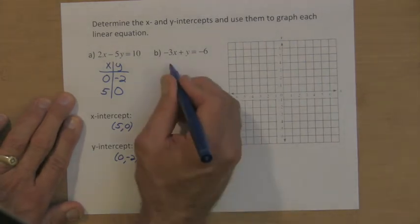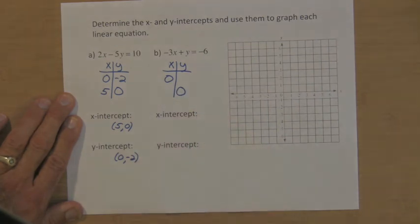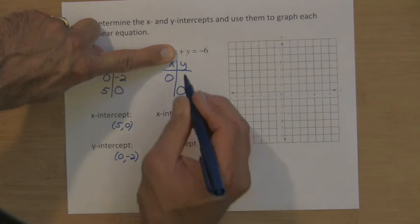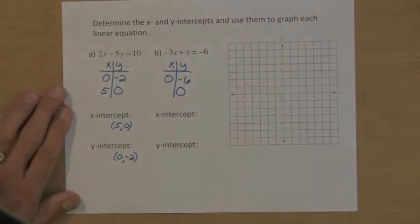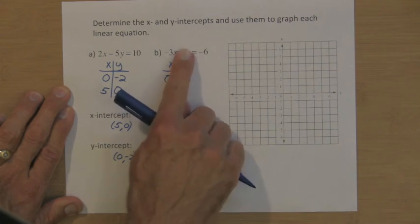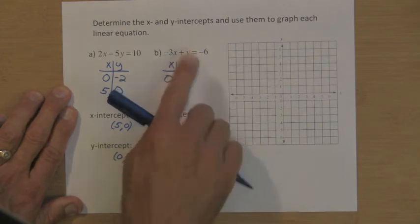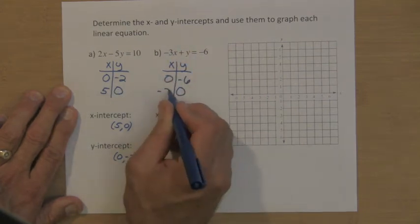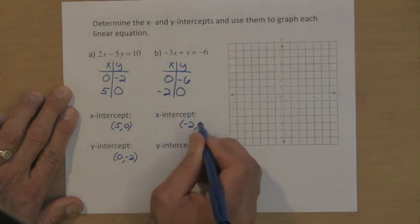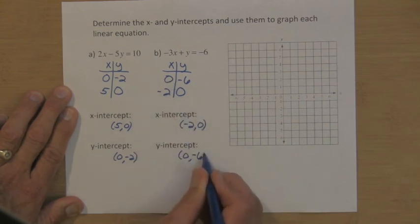For the second equation, find x and y values. When x is zero, negative three times zero goes to zero, so I just have y equals negative six — so there's one point. And when y is zero, putting in zero for y gives negative three x plus zero, so negative three x has to be negative six, meaning x has to be two. My x-intercept is when y equals zero, so that's the point two, zero. My y-intercept is when x is zero, and that's zero, negative six.